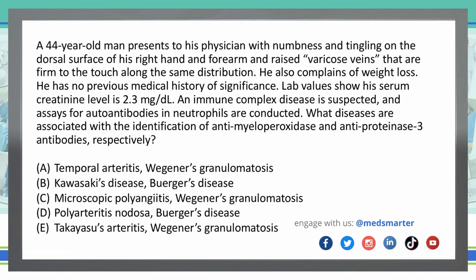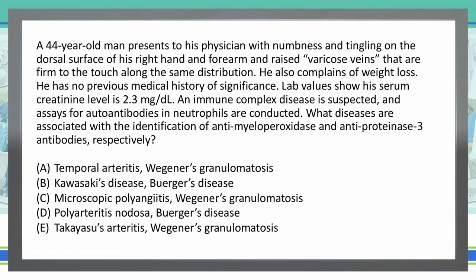A 44-year-old man presents to his physician with numbness and tingling on the dorsal surface of his right hand and forearm and raised varicose veins that are firm to the touch along the same distribution. He also complains of weight loss. He has no previous medical history of significance. Lab values show his serum creatinine level of 2.3 mg per deciliter. An immune complex disease is suspected, and assays for autoantibodies in neutrophils are conducted. So what diseases are associated with the anti-myeloperoxidase and anti-proteinase 3 antibodies, respectively?